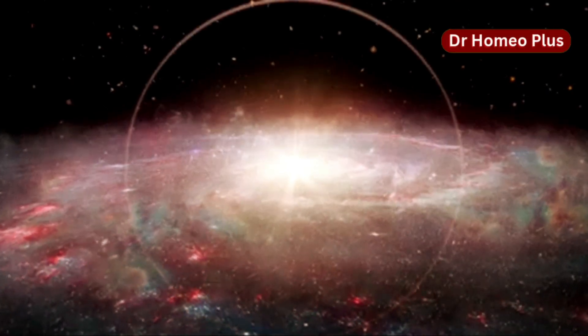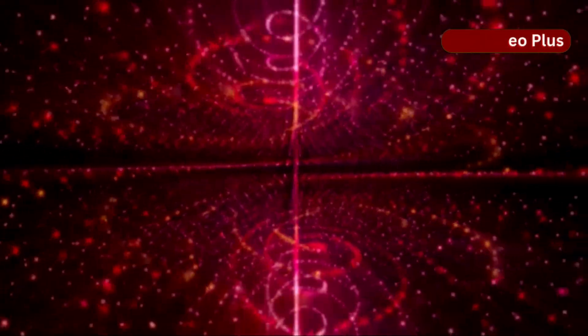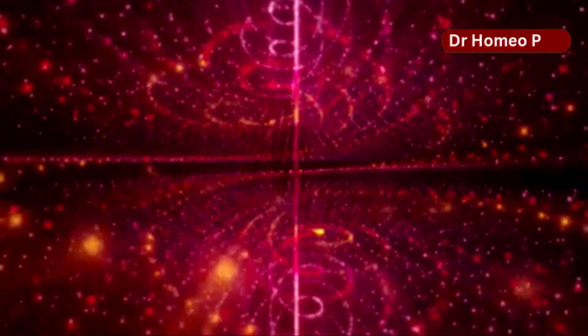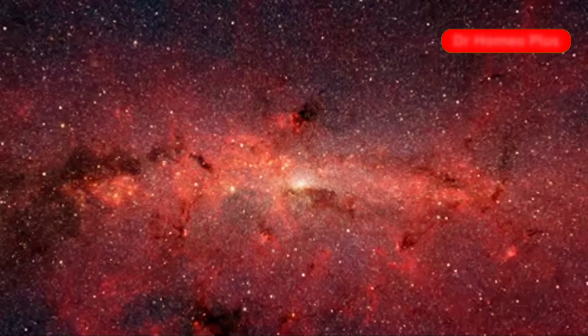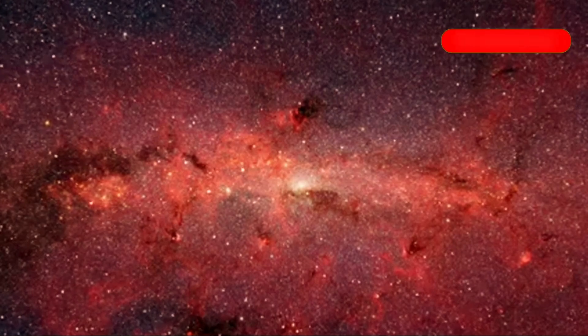At that time, the universe was a hot, dense plasma of particles. The CMB is a faint glow of microwave radiation that permeates all of space. It is a relic from a time when the universe was much younger and hotter. It was released when the universe had cooled enough for atoms to form, allowing light to travel freely for the first time. This event marked a significant milestone in the universe's history.